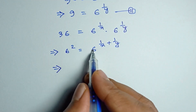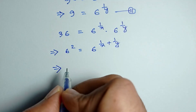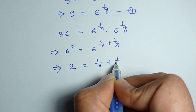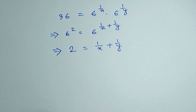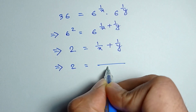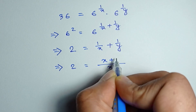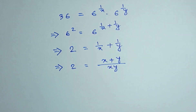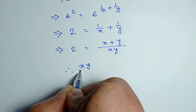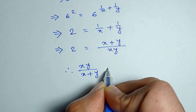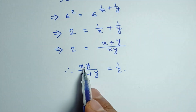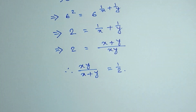Since the bases are the same, the powers are equal: 2 is equal to 1 by x plus 1 by y, which simplifies to 2 equals x plus y divided by xy. So xy divided by x plus y is equal to 1 by 2. Here is the value of xy divided by x plus y. Thanks for watching.